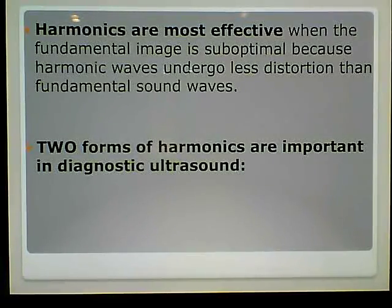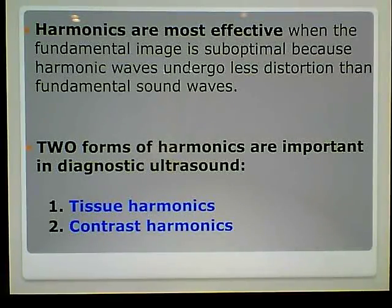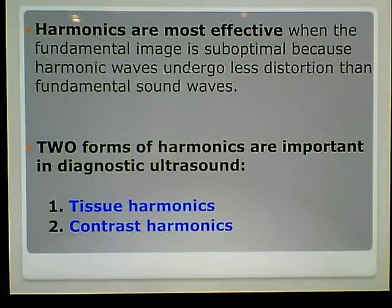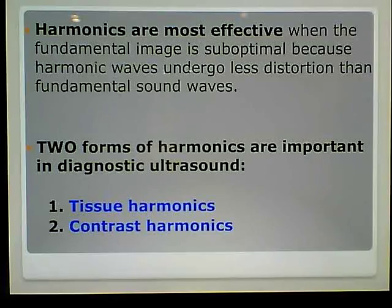There are two forms of harmonics important in diagnostic ultrasound: tissue harmonics and contrast harmonics. Tissue harmonics is a more naturally occurring harmonic. Contrast harmonics — if you've ever had a CT with contrast via IV — that's a man-made, assisted type of harmonic. One occurs naturally, the other we help along.